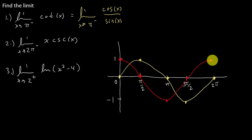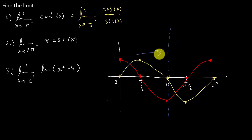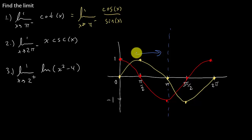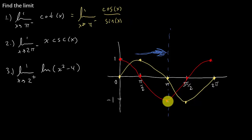What we're doing is looking right here as we're approaching pi from the left-hand side. We've got cosine over sine. As we're getting closer and closer to pi from the left-hand side, cosine is going to be right around negative 1.